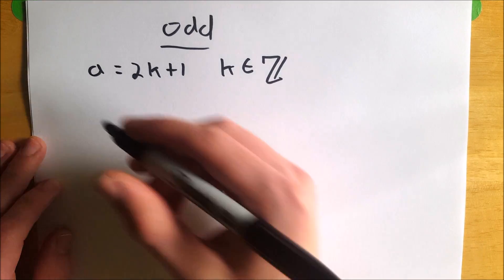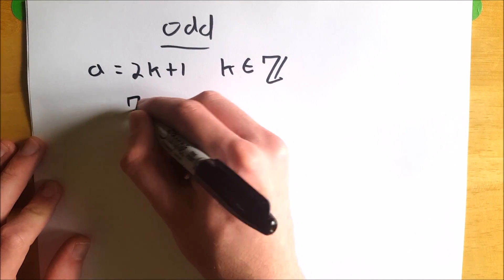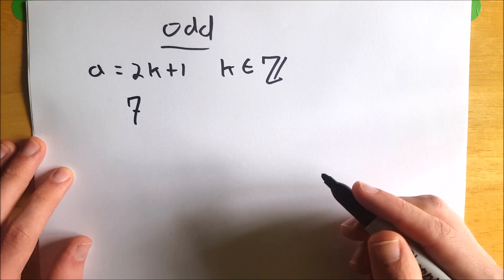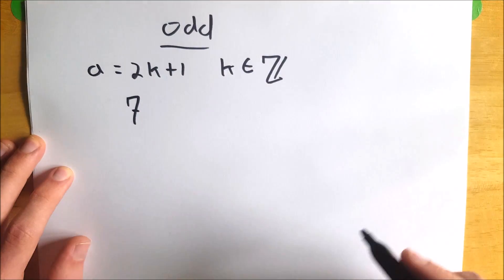So here's a quick example. We know that 7 is odd, also happens to be prime, one of my favorite odd numbers. How do we know that 7 is odd?